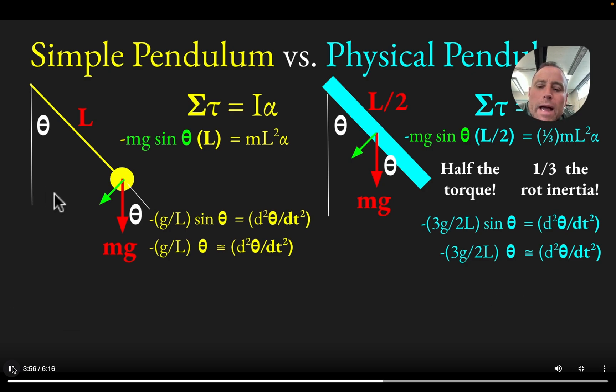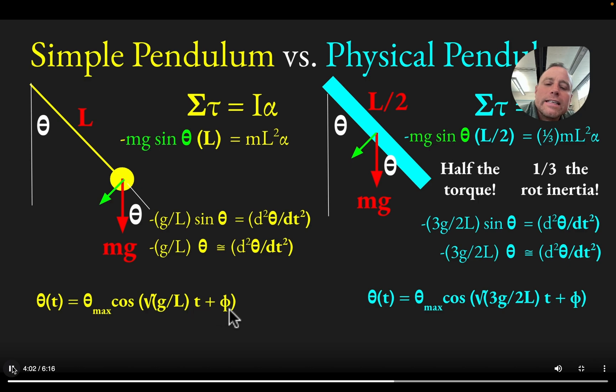And so on the simple pendulum side, you get the familiar answer that theta is like theta max times cosine root G over LT plus a phase. You get a very similar expression on the physical pendulum side, except for the extra three and the two.